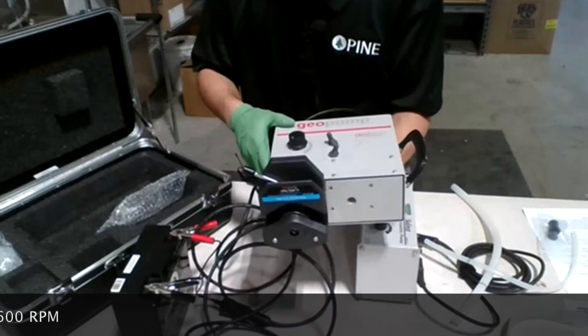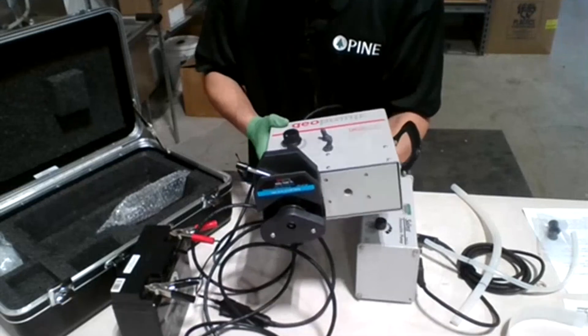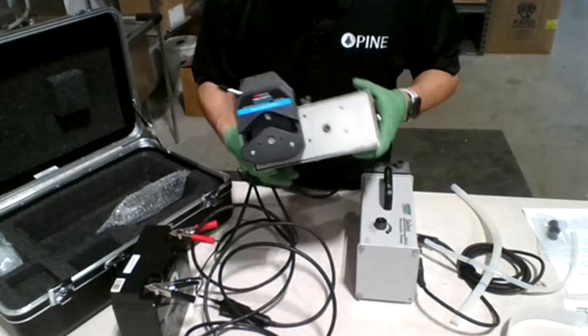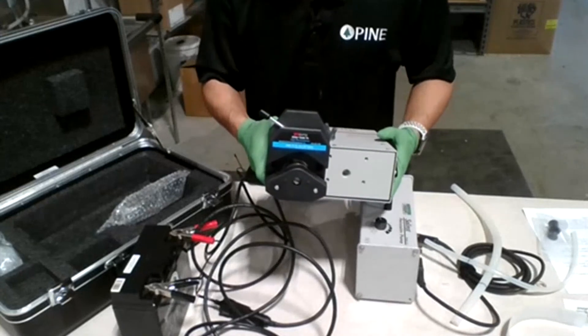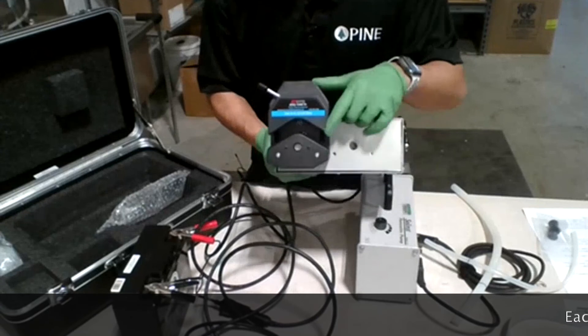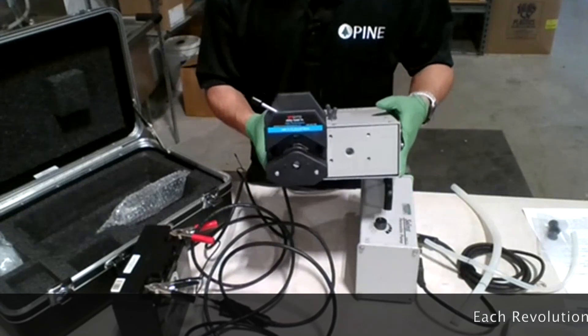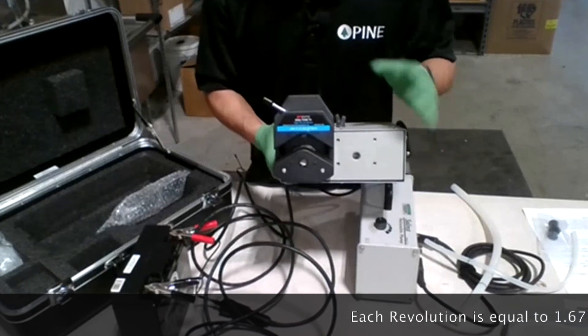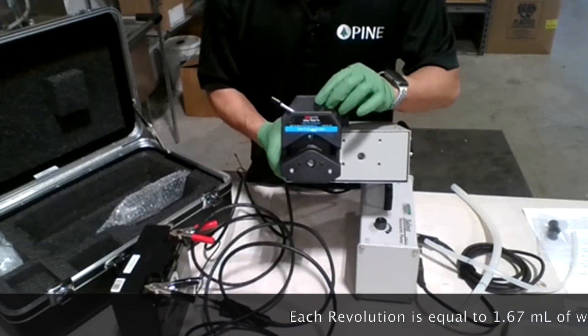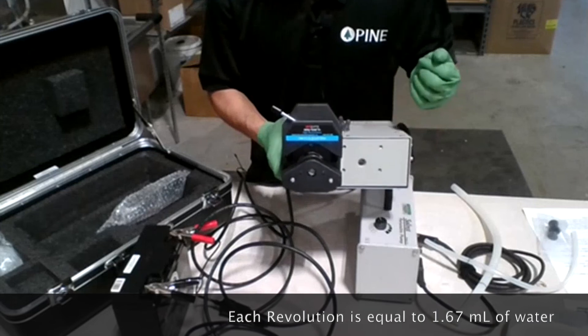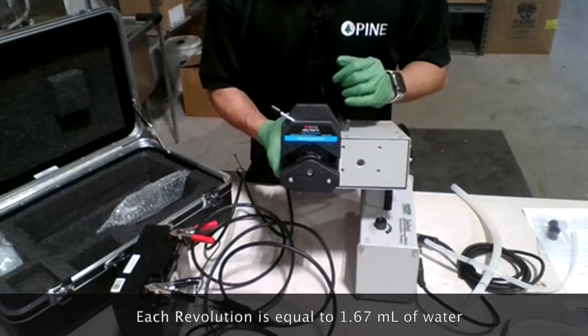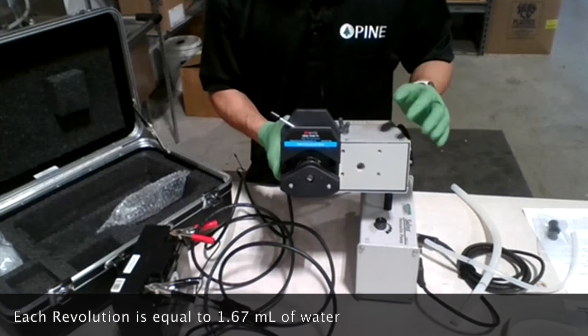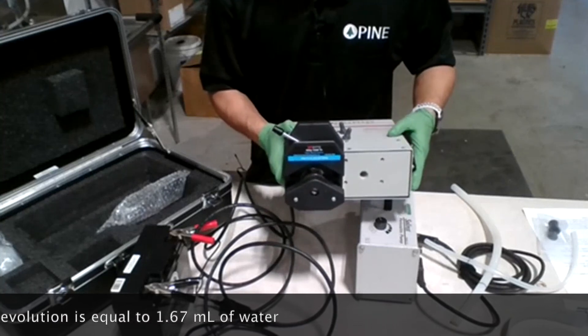Someone may ask how much volume can I get out of this one. Each revolution for the shaft here is equal to 1.67 milliliters. You can see how much flow you're pumping or drawing back by counting how many revolutions you have here.